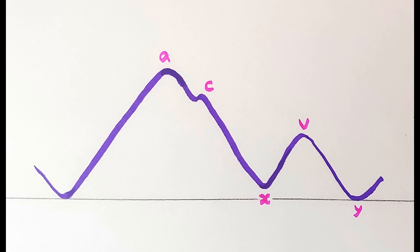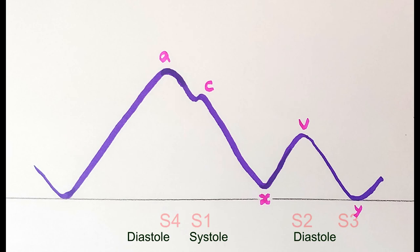What does each wave represent? The A wave represents atrial contraction just preceding systole and the first heart sound, coinciding with the fourth heart sound. The C wave coincides with systole, representing bulging of the tricuspid valve into the atrium during ventricular contraction. The X descent represents relaxation of the atrium during systole. The V wave represents increasing pressure in the right atrium as it fills with blood from the periphery. The Y descent is the fall in pressure during diastole as the ventricles relax, the tricuspid valve opens, and blood flows out of the right atrium — it coincides with the third heart sound.